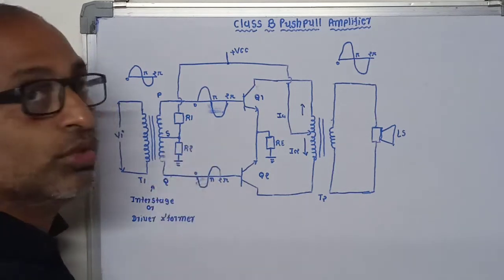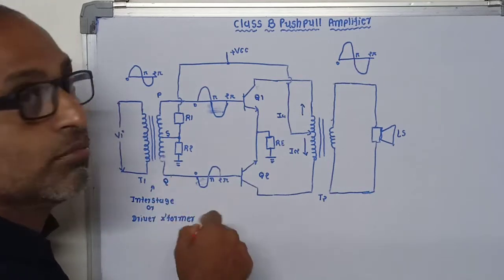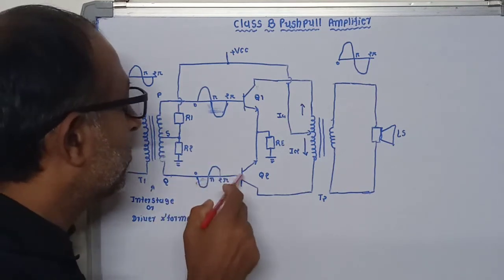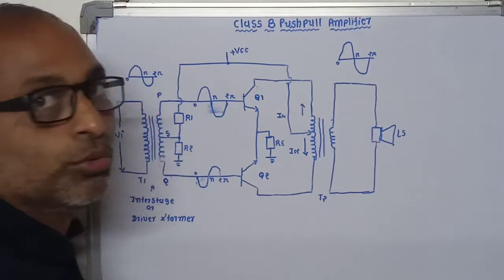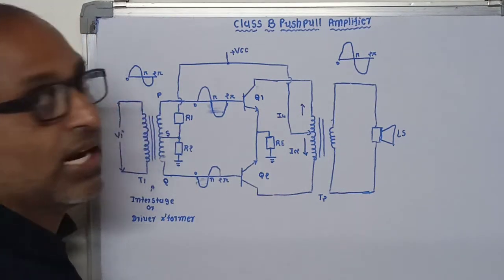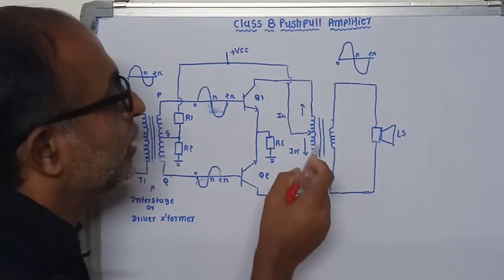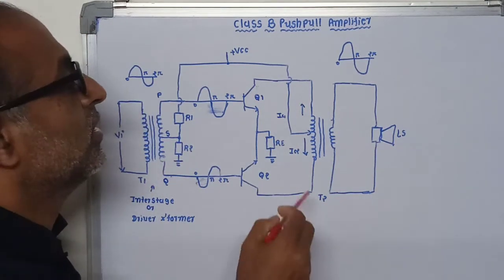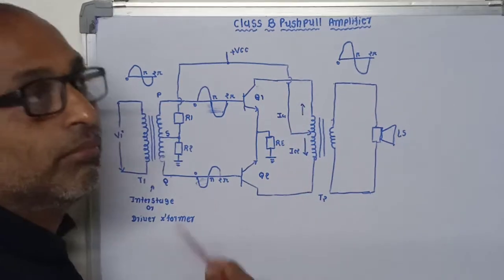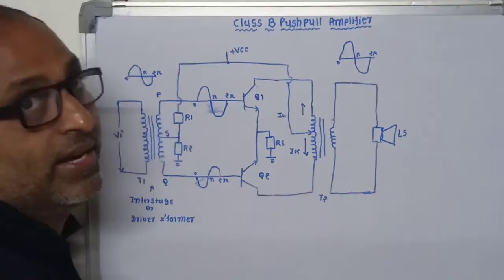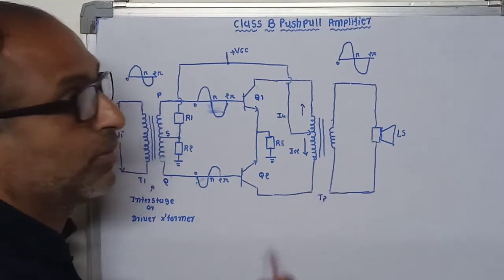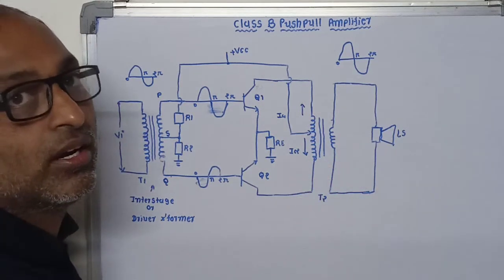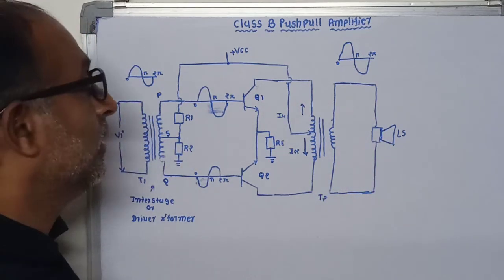During the negative half cycle of the input, the Q terminal becomes positive and the P terminal becomes negative. So the base of transistor Q2 becomes positive and collector current flows through Q2. As a result, flux is produced in the core of the windings, which induces EMF in the secondary winding of transformer T2, and due to this voltage, current flows through the loudspeaker in the opposite direction.